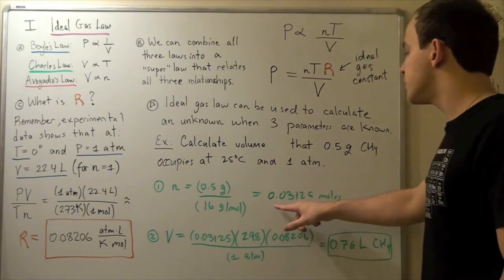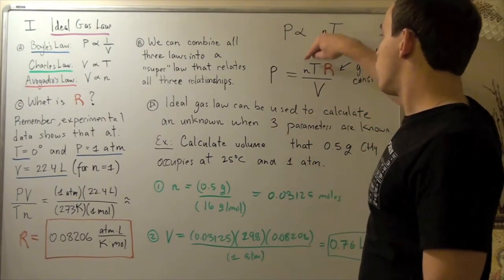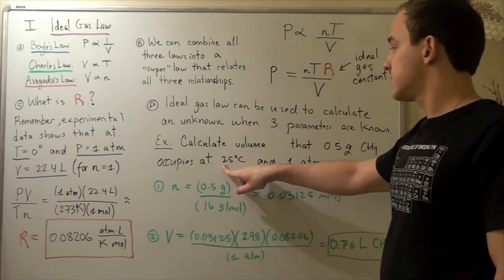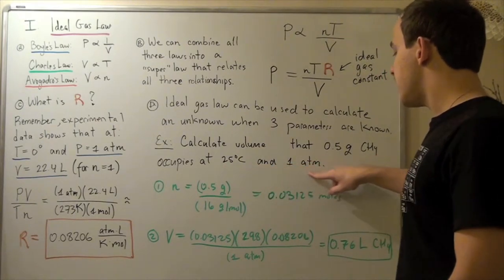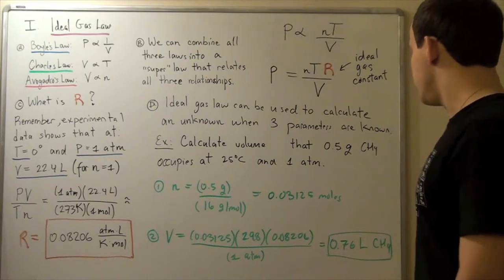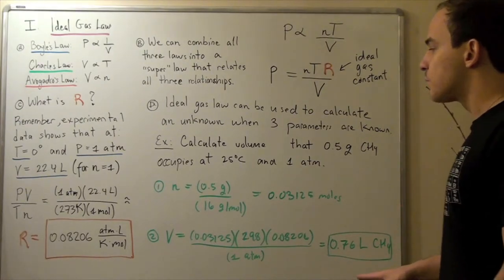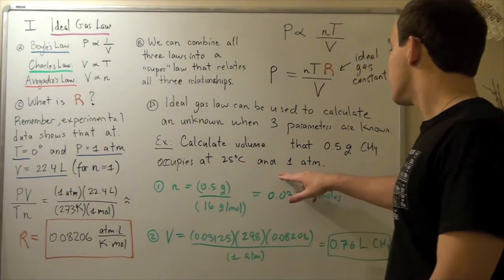We take moles, plug it into our formula, along with not 25 degrees Celsius, but 273 plus 25, then 1 atm, and we'll get the following numbers. Plug that in, and we get 0.76 liters of methane will occupy at this temperature, this pressure, and this amount.